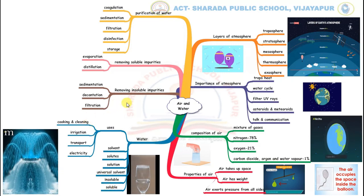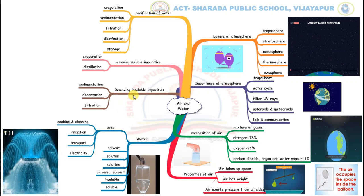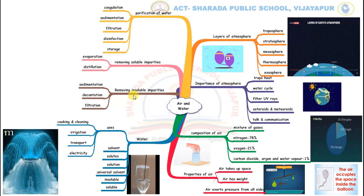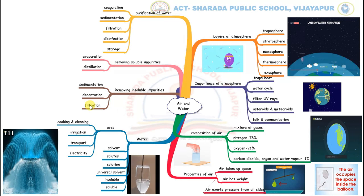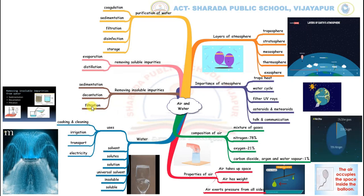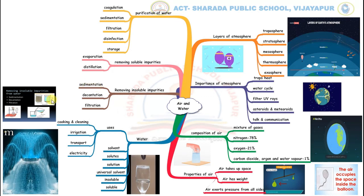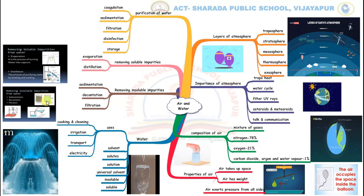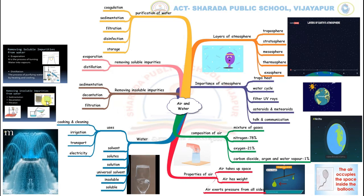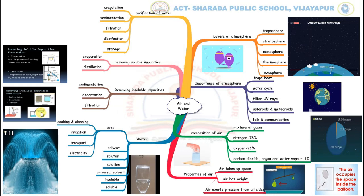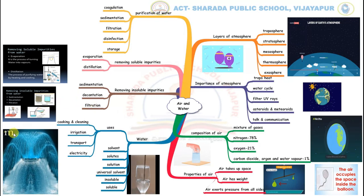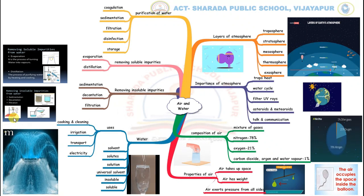The next branch deals with removing insoluble impurities. Insoluble impurities can be removed by sedimentation, decantation and filtration. A mixture of mud and water is allowed to stand undisturbed for some time. After some time, the mud settles down at the bottom of the container as sediments — this process is called sedimentation. The clean water is then poured into another separate container without disturbing the sediments — this is called decantation. In filtration, the mixture of water and impurities is passed into another container through a filter paper.